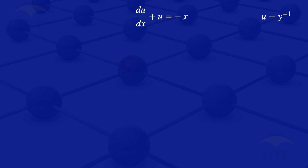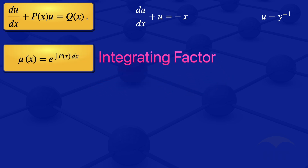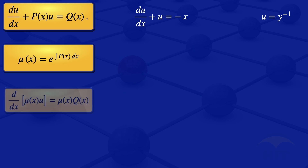We see that it is of the form of a linear differential equation: du/dx plus p(x)·u equals q(x). To solve this type of differential equation, we use an integrating factor. The integrating factor is defined as μ(x) equals the exponent of the integral of p(x) with respect to x. When we multiply the differential equation by the integrating factor, it simplifies to d/dx[μ(x)·u] equals μ(x)·q(x).